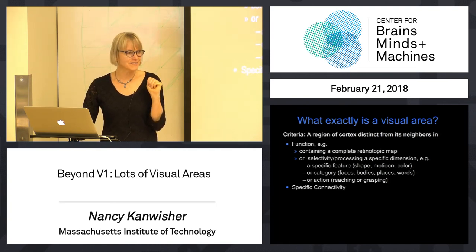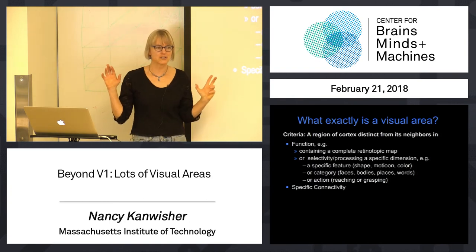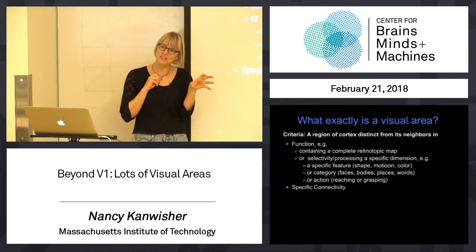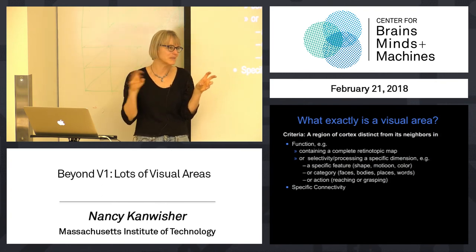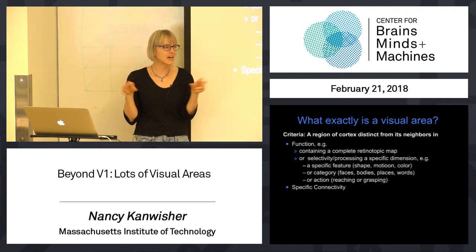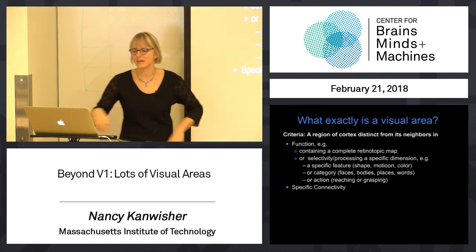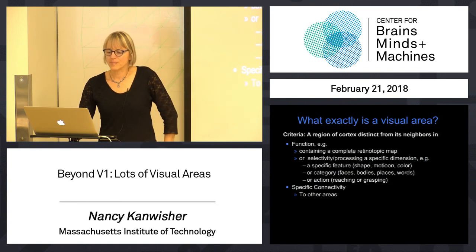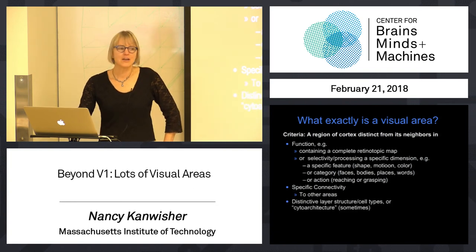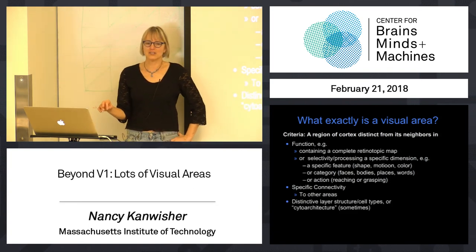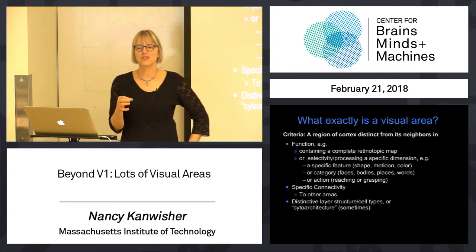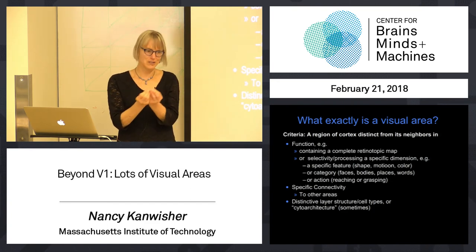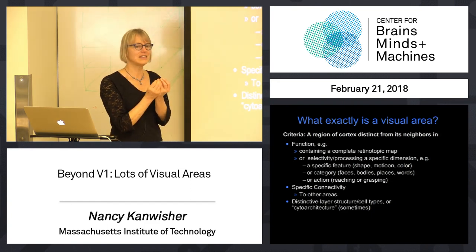Another criterion is specific connectivity. That whole wiring diagram I showed you — the connections of each of those cortical areas to all the others — was different for each area. So they're highly interconnected, but the pattern of connectivity is distinct for each visual area. And finally, a looser criterion: for some areas, there are actual differences in cell types and layer structure that you can see in histology.